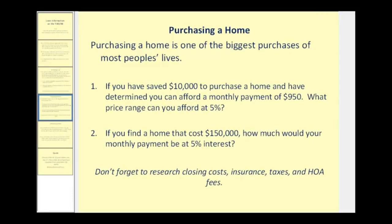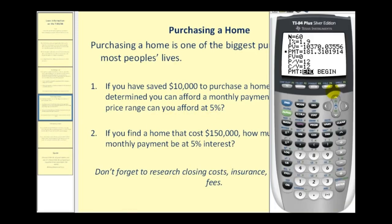Let's take a look at purchasing a home now. Purchasing a home is one of the biggest purchases of most people's lives. If you have saved $10,000 to purchase a home and have determined that you can afford a monthly payment of $950, what price range can you afford at 5% interest? Let's go back to the calculator. Typically a loan for a home is for 30 years — 30 times 12 would be 360 months. The interest rate is 5%. We don't know the present value, so we enter zero. The payment we said we could afford was $950. Future value is zero, with monthly payments and monthly compounded interest, paying at the end of each month. We go back up to present value, clear this, and press alpha enter — this tells us we could afford a loan amount of just under $177,000.